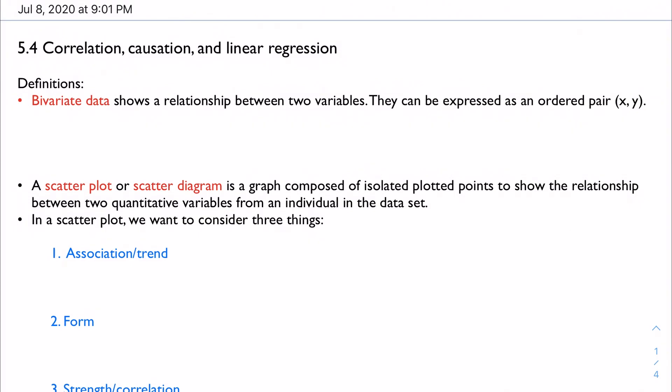With this topic we're talking about bivariate data mostly. Bivariate data shows a relationship between two variables, by the prefix for two, and they are typically expressed as an ordered pair (x, y).